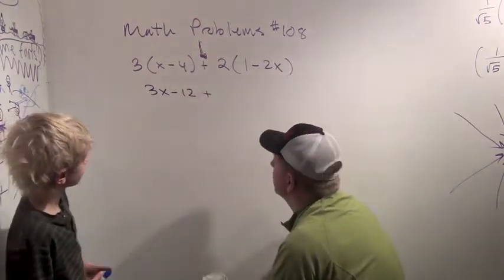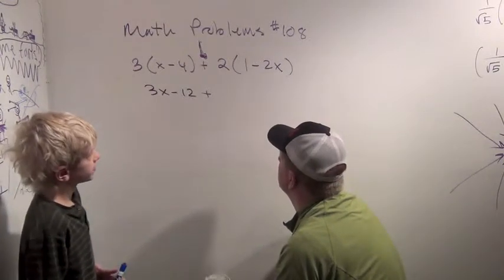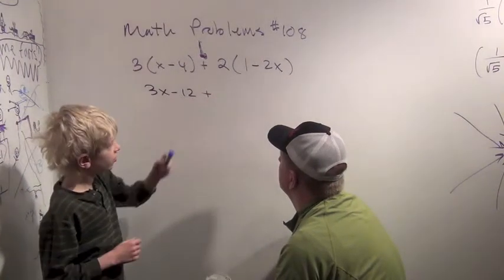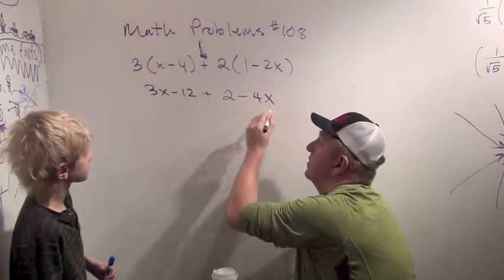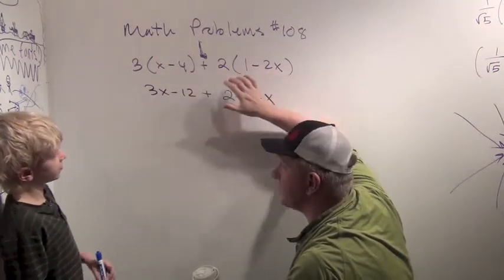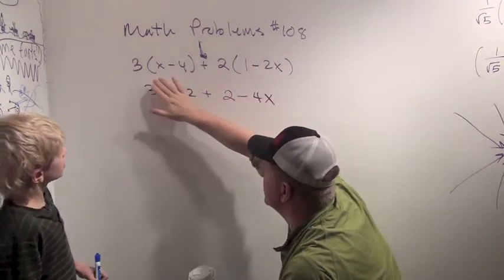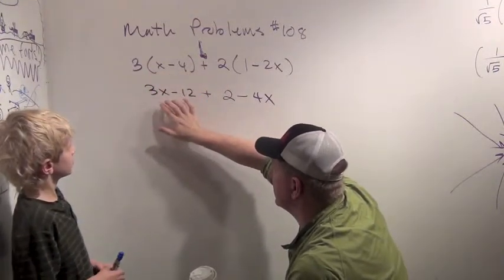Okay. So plus, don't forget those pluses and minuses. So it's two times two minus four x. Two minus four x. Very good. So you were right to think to simplify inside the parentheses first. But there was nothing more to simplify. And then we can just multiply it out.